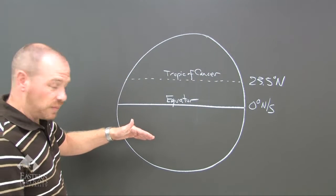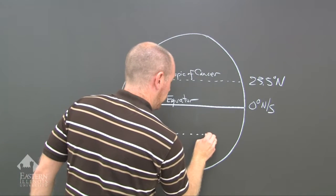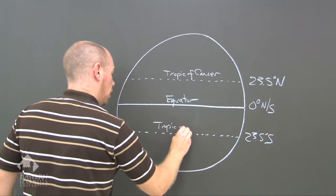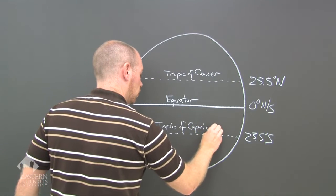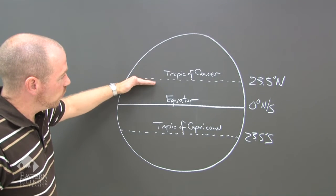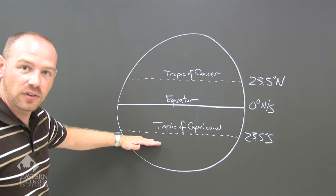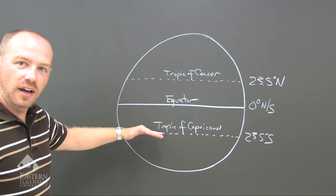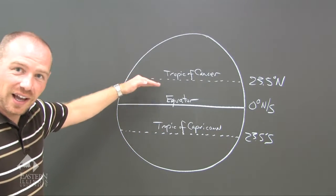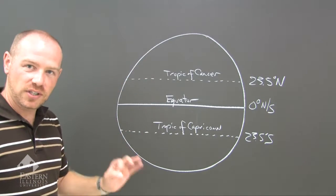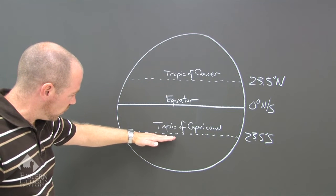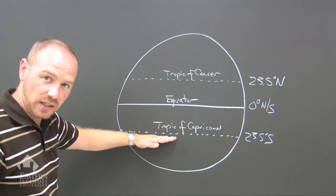Now we'll go back to the southern hemisphere, and at 23.5 degrees south, we have the Tropic of Capricorn. Before I go any further, that 23.5 degrees north through 23.5 degrees south is the full extent of the direct ray of the Sun. These lines are here to show that the direct ray of the Sun only goes this far north in summer, and this is the furthest it goes south.